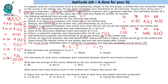Now for the questions: Whose interview was at 9 AM? The answer is Deepthi. How many candidates were scheduled between Bharat and Isha? Bharat and Isha have three people scheduled between them.